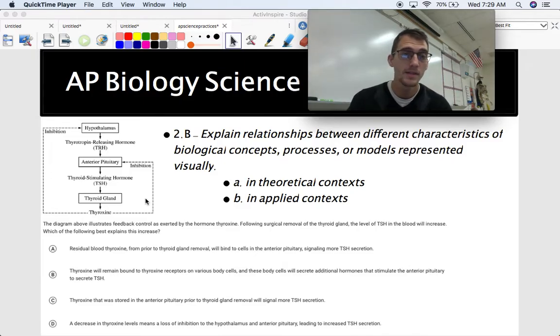The hypothalamus releases TRH, activates the anterior pituitary gland, which activates TSH, activates the thyroid gland, and then there's some feedback loops going on here. So it says, the diagram illustrates feedback control as exerted by the hormone thyroxine. Following surgical removal of the thyroid gland, the level of TSH in the blood will increase. Which of the following best explains this increase? So once again, this is asking you to, this is showing your understanding of feedback loops based on your analysis of this diagram. So you'd have to take this apart and figure it out, what's going on, and how it relates, and pick the option that makes the most sense.